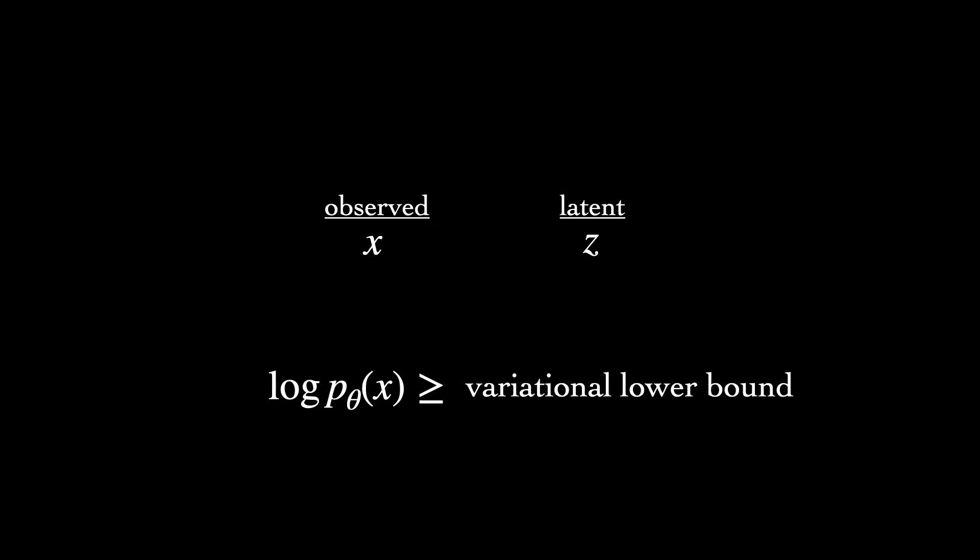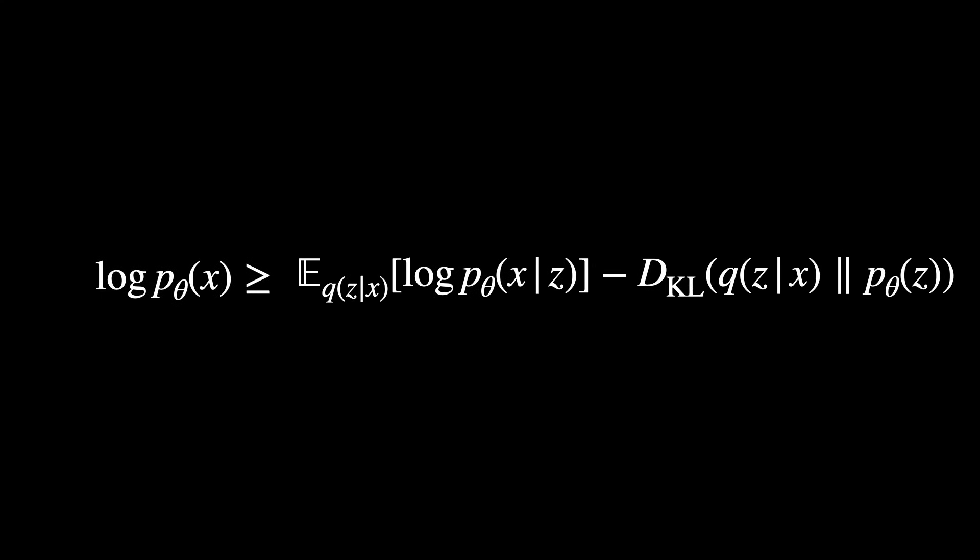We won't walk through the full derivation here, but the end result is a likelihood term, also known as a reconstruction term, subtracted by a KL divergence term. The likelihood term encourages the model to maximize the expected density assigned to the data, while the KL divergence encourages the approximate posterior, q, to be similar to the prior on the latent variable, p.